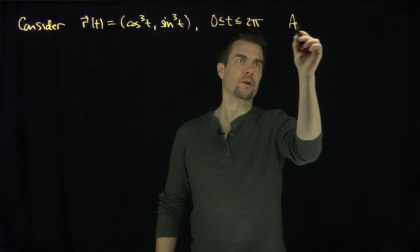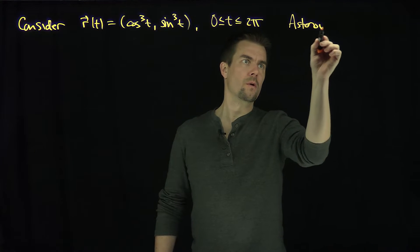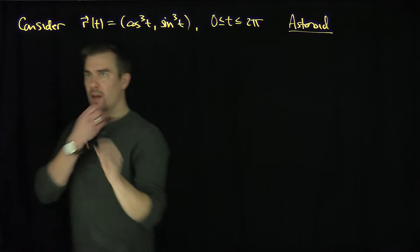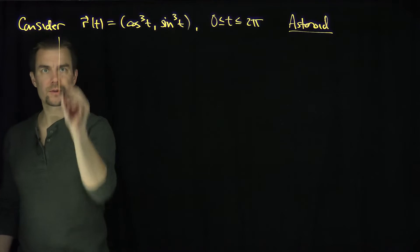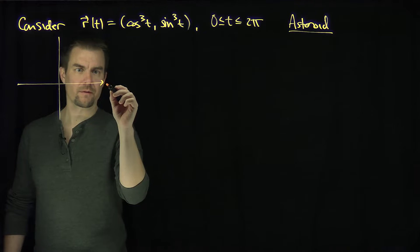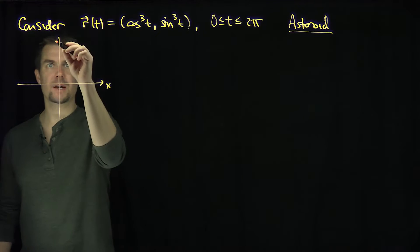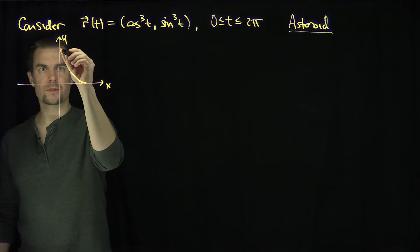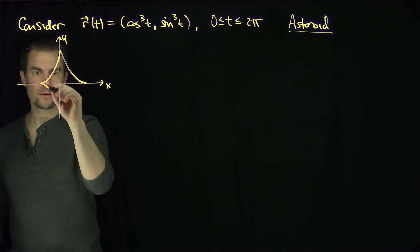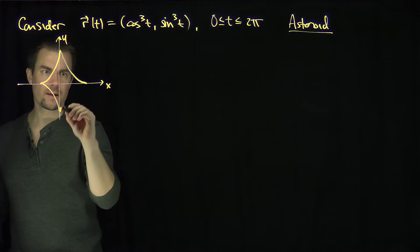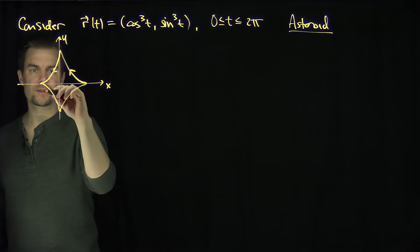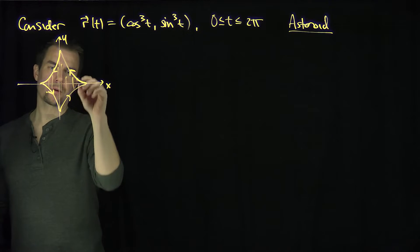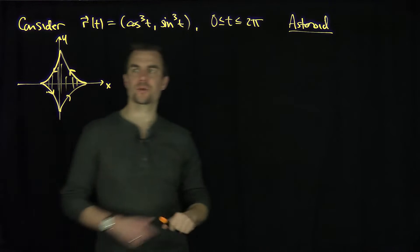This curve is called an asteroid, and it's a special hypocycloid of four cusps. If we plot this curve on a calculator for different values, with the x-axis and y-axis, it goes up, comes back down, goes back like that and like that — so the curve orients like this. I'd like to find out what the area inside this hypocycloid or this asteroid is.